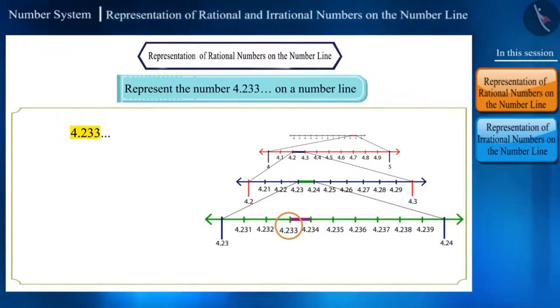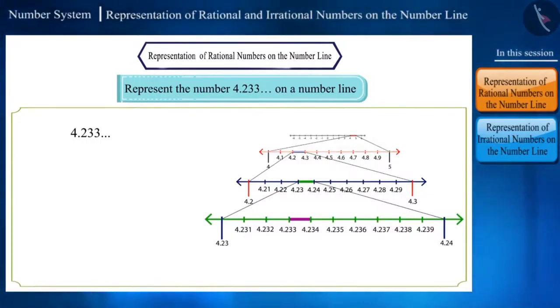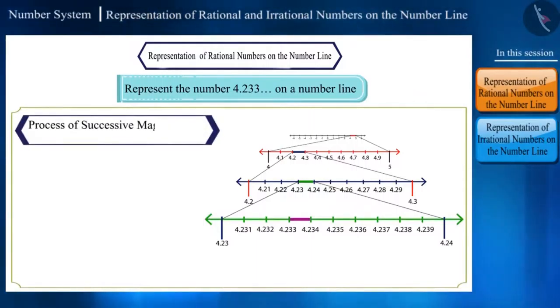To accurately or precisely locate the number on the number line, we had to divide or magnify the number line into many such 10 equal parts. So, this process is called as successive magnification.